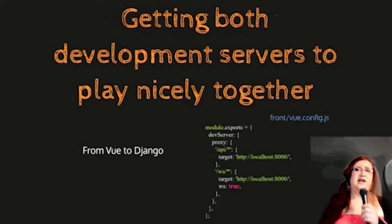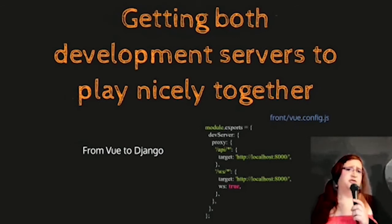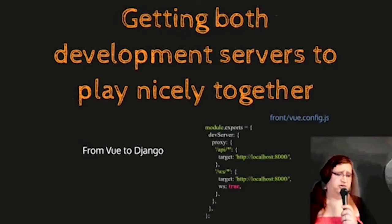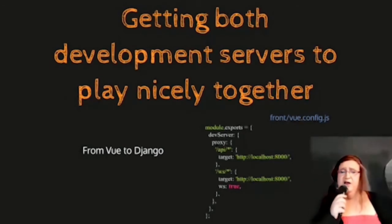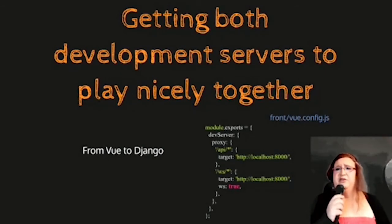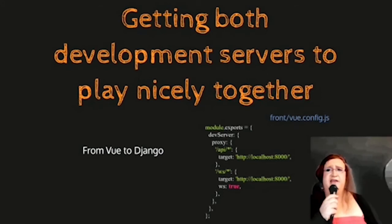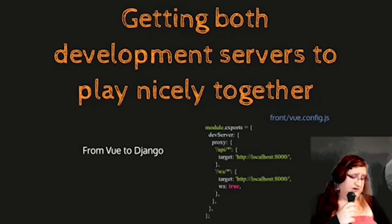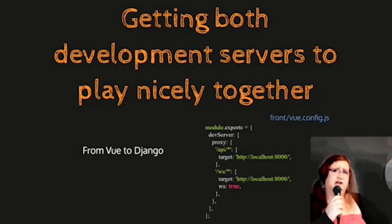The first issue I encountered was trying to have the two servers talk nicely together. Django has its own development server, but Vue also has a development server with auto-reload and other nice features. To handle this, you have a config file for Vue in which you can specify some information. That config file is used for Vue and is later transformed to be used by Webpack as well. You can see that we are proxying every API request and every WebSocket request to Django.